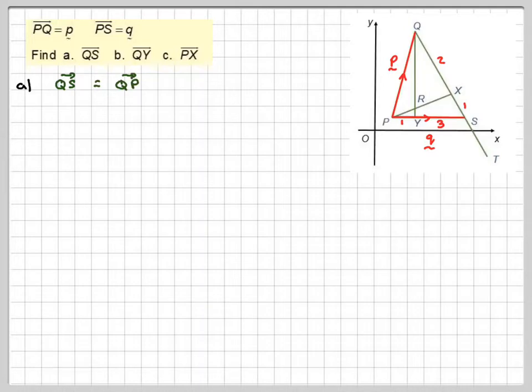QS is like going QP plus PS. So that's going to be minus p plus q. Normally we would write that as q minus p, swapping these two over and taking the sign.